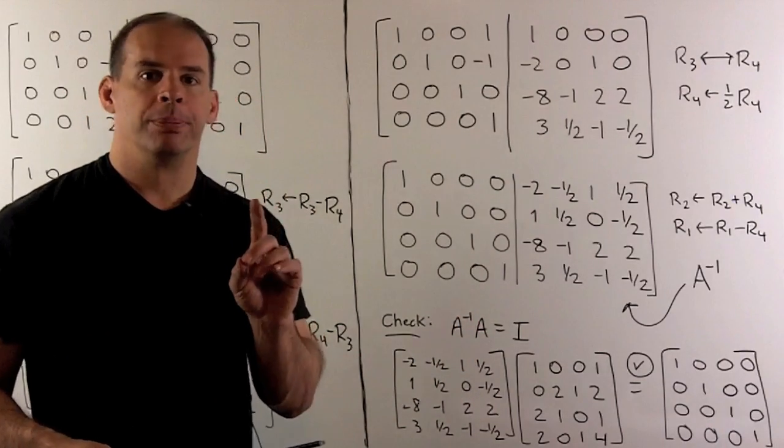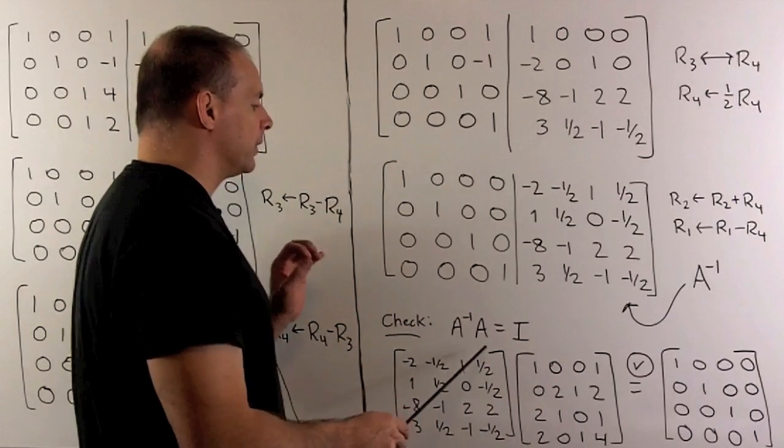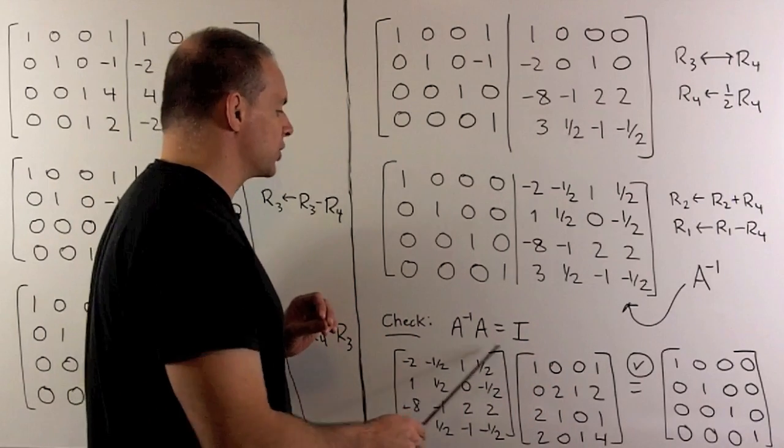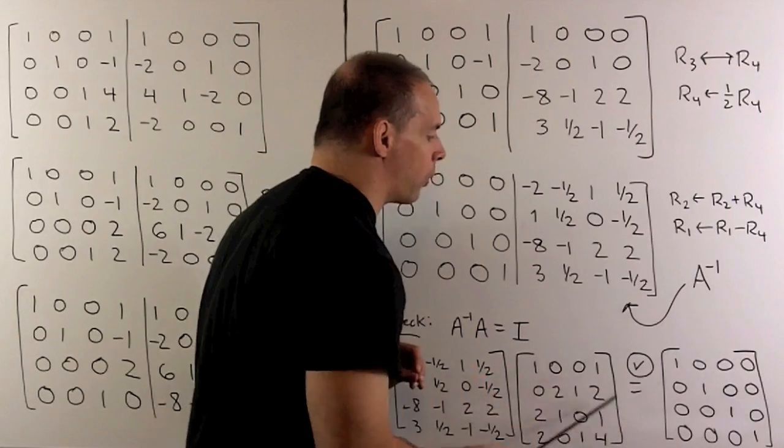Now we check our work. So we'll take our A inverse, multiply it by our original A, and we expect to get back the identity matrix. So if we work that out, we see that this is in fact checking our work.